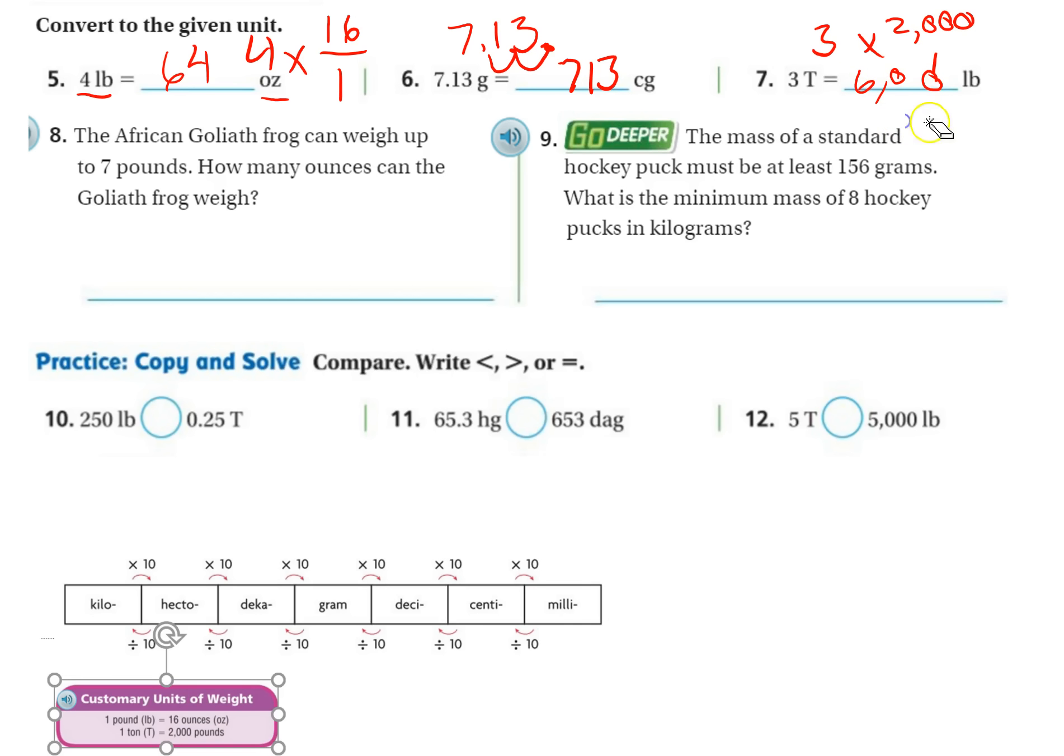Number eight: The African Goliath frog can weigh up to seven pounds. How many ounces can the Goliath frog weigh? All right, let's set it up. I want ounces, so ounces go on top. So one pound is 16 ounces, and I multiply that by seven. So 16 times seven: seven times six is 42, seven times one is seven, plus four is 11. So 112 ounces. Done. Keep cruising, let's keep going.